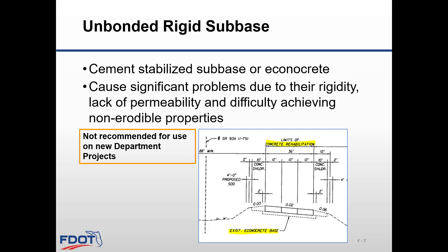This typical is a segment of I-75 near I-4 in Tampa where econocrete was used on some of those ramps and they needed reconstruction. The reconstruction took place in 2003 due to the poor condition of the pavement.